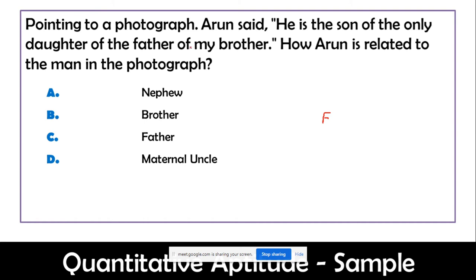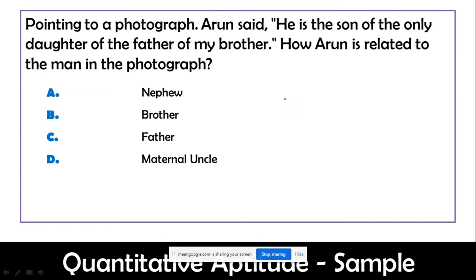To solve this, note who has said it — Arun. In the quotation, find the word 'my' — 'my brother.' So Arun has a brother. Then go: brother's father — one level up. From father, go to father's daughter — only daughter. From daughter, go to her only son. Now, Arun's brother has a father who has a daughter, and that daughter has a son. This only son's mother is Arun's sister. So Arun is this person's maternal uncle.